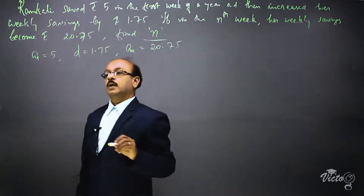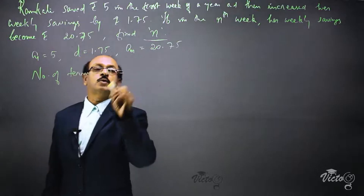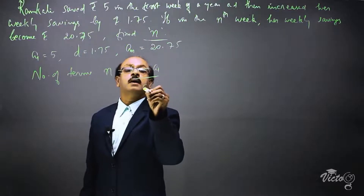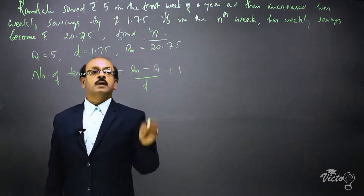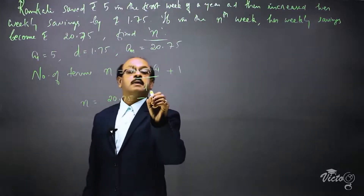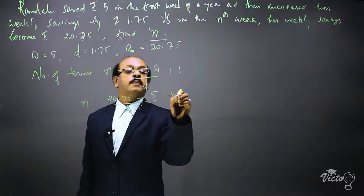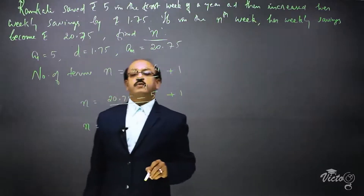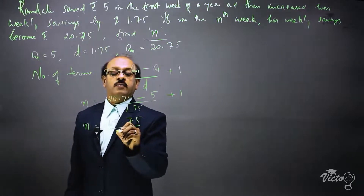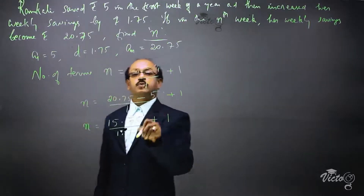Now we can write down the formula for finding the number of terms: n = (an − a1) / d + 1. Substituting: n = (20.75 − 5) / 1.75 + 1. That gives us 15.75 divided by 1.75, plus 1.